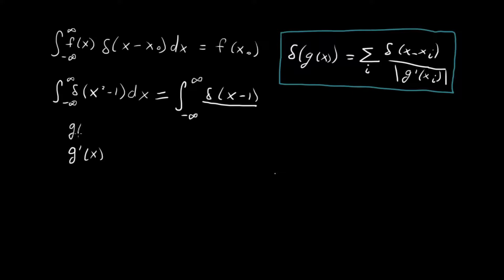What's our g'(x) here? First, what's our g(x)? Our g(x) = x² - 1, so our g'(x) = 2x. Great. So the first term corresponding to the root x = 1 is δ(x - 1) divided by the absolute value of 2x, or just 2 in this case.